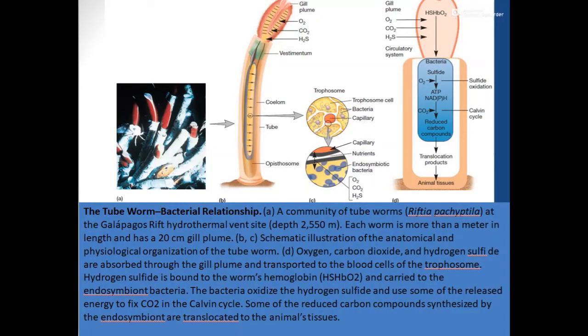Welcome back students to some more examples of insect bacterial mutualisms. The one we are going to discuss now is the tube worm bacteria relationship. This type of relationship has mainly been found several thousand meters below the surface of the ocean where the earth's crustal plates are separating apart, resulting in lots of hydrothermal vent sites, mainly near the Galapagos rift hydrothermal vent site.